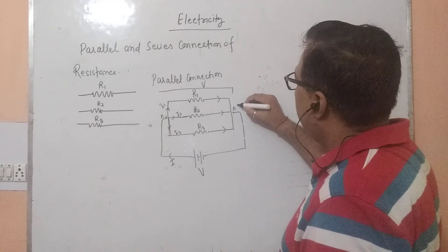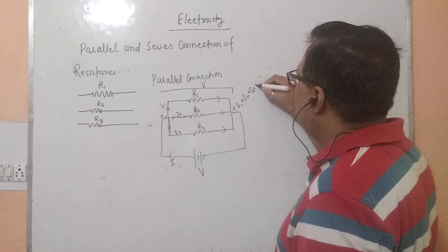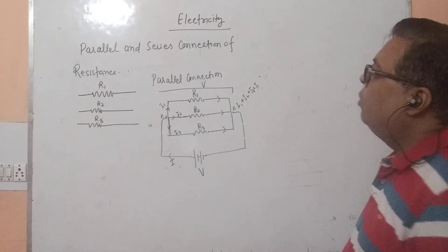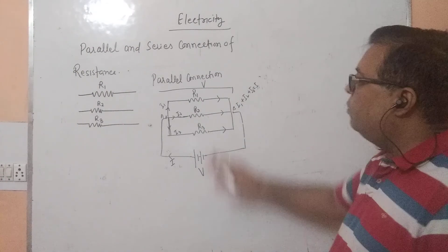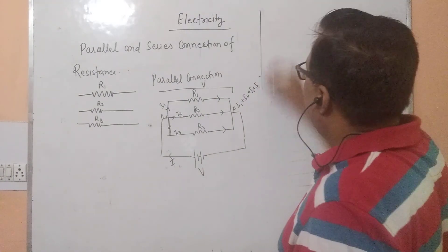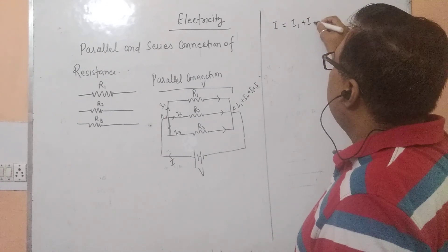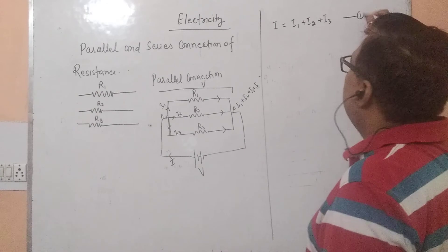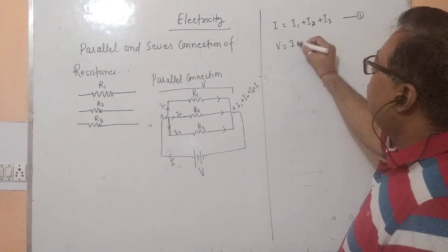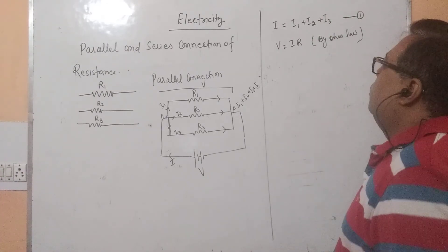When the currents reach point B, they will be added — I1 plus I2 plus I3. By using this addition, we can find the equivalent resistance of resistances connected in parallel. Since I is equal to I1 plus I2 plus I3 — equation number 1. And you know that by Ohm's law, V is equal to I into R.